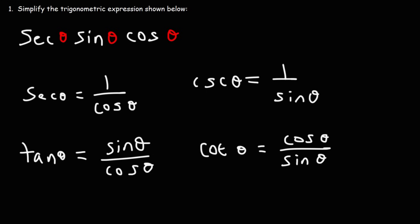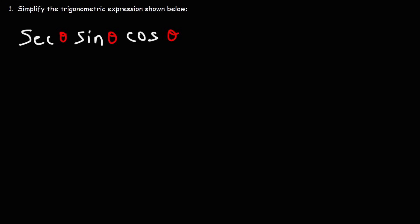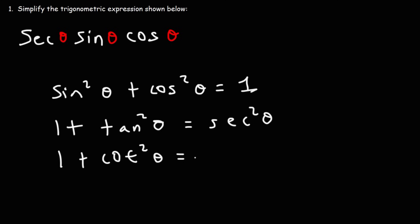Make sure to write these formulas down because we're going to be using them throughout this video. You also need to know the trigonometric Pythagorean identities. The first one: sine squared plus cosine squared theta is equal to 1. Then we have 1 plus tangent squared is equal to secant squared. And 1 plus cotangent squared is equal to cosecant squared theta.